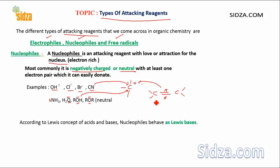According to the Lewis concept, a Lewis base is a molecule which can donate an electron pair — an electron pair donor is a Lewis base. Since nucleophiles donate electrons, they are electron donors. Therefore, nucleophiles behave as Lewis bases.